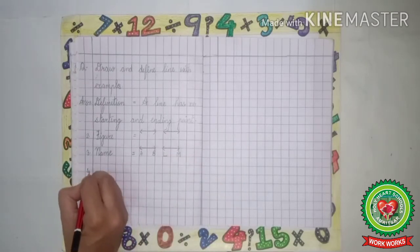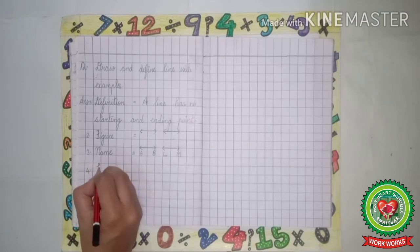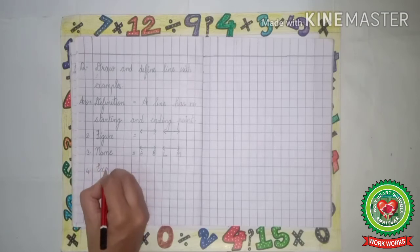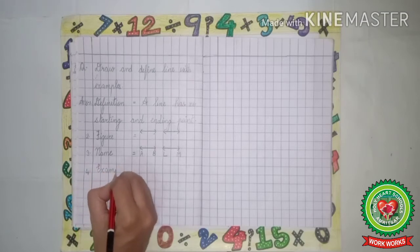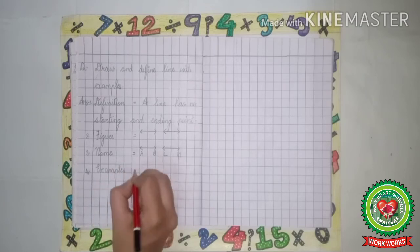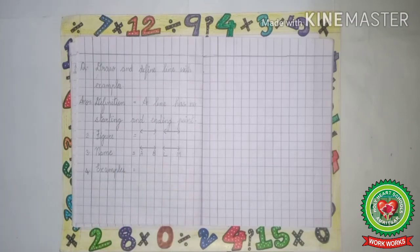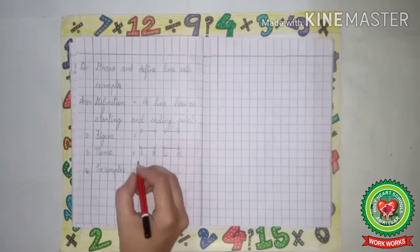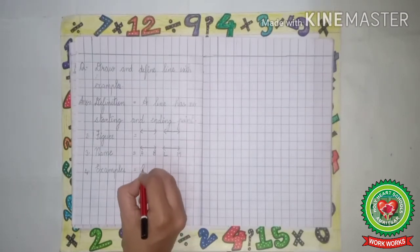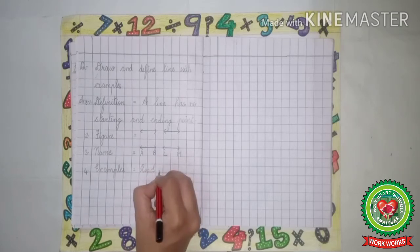Now leave one line, four dot. Examples, E-X-A-M-P-L-E-S examples. Now what are the examples of line? Road, R-O-A-D road, comma.